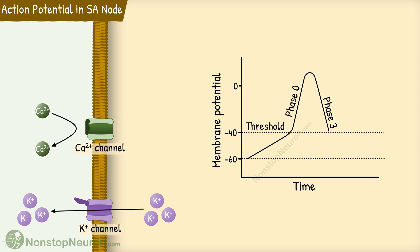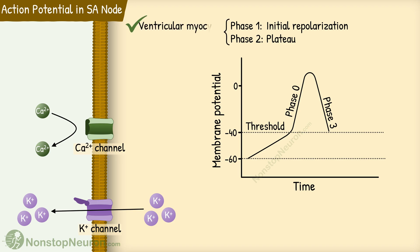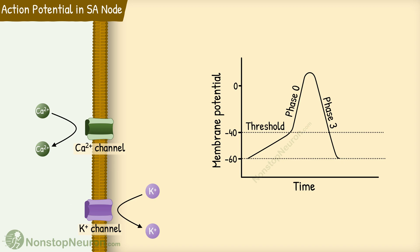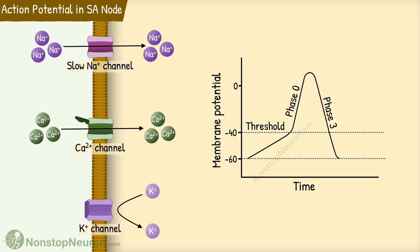Where is phase 1 and phase 2? Phase 1 is initial repolarization and phase 2 is the plateau, but they are seen in ventricular myocytes — they are not seen in the SA node. So we directly have phase 3 of repolarization. The potassium efflux continues for some time even after this, so the membrane is hyperpolarized. Now we have reached the potential from where we started. At this point, potassium channels start closing, so efflux of potassium decreases. And this sodium and calcium influx once again overbalances the potassium efflux, so there is a net entry of positive charge into the cell. The membrane potential again moves towards electropositivity. This phase is called phase 4.